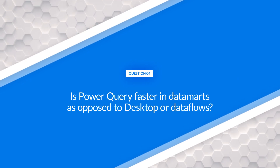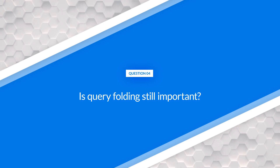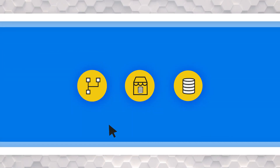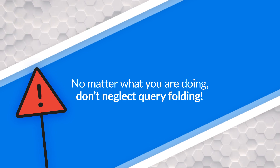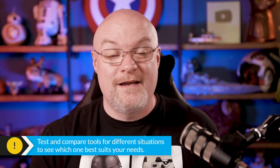Is Power Query faster in Datamarts than in other areas like Dataflows or a dataset? And a secondary piece of this question is: do I still need to care about query folding as part of Power Query? Honestly, I don't know. If you're doing the same transformations in Dataflows, Datamarts, and Datasets, I would expect them to be pretty much the same. When it comes to query folding — absolutely, you need to pay attention to that regardless of what you're doing with Power Query. If you're not taking advantage of query folding and something breaks, I'd see that performance degradation across the board — in a dataset, in a Datamart, in a Dataflow. Always test and verify: try it in Power BI Desktop and compare it to what you're seeing in Datamarts.